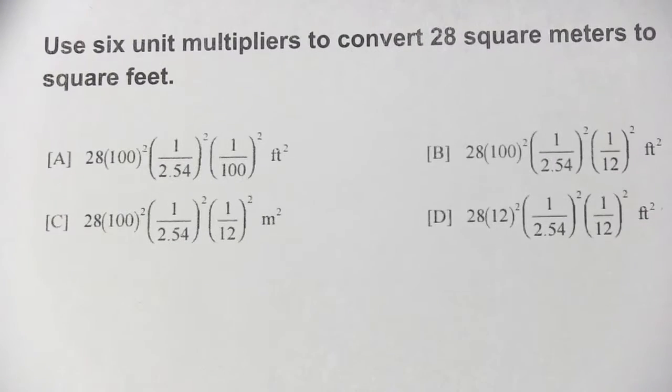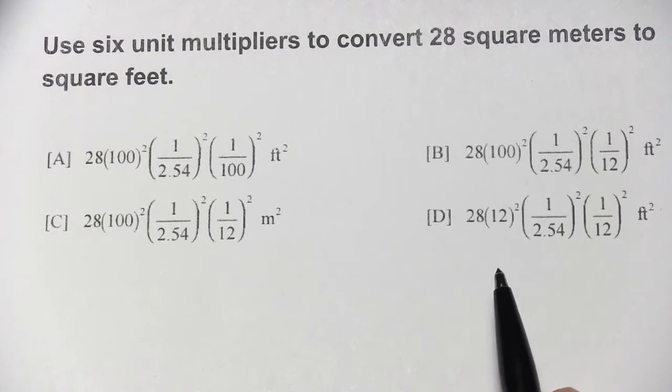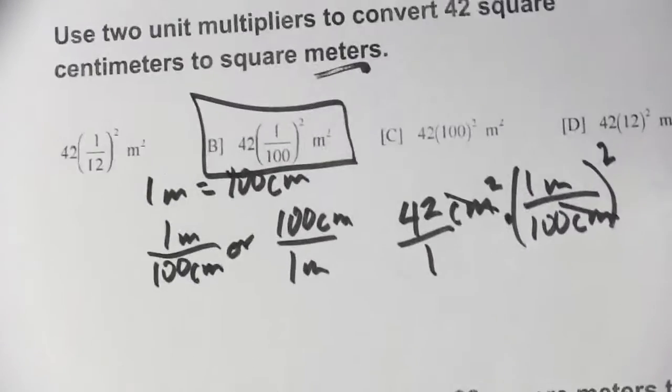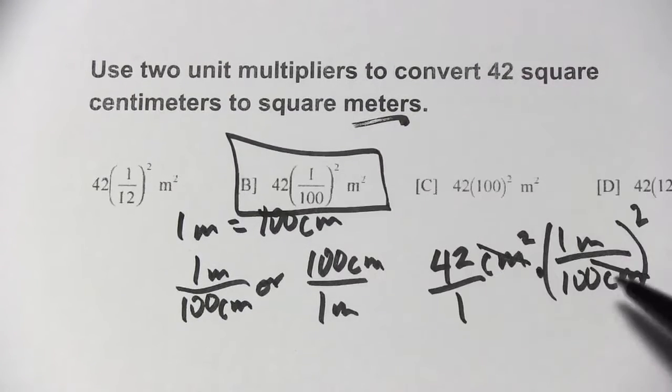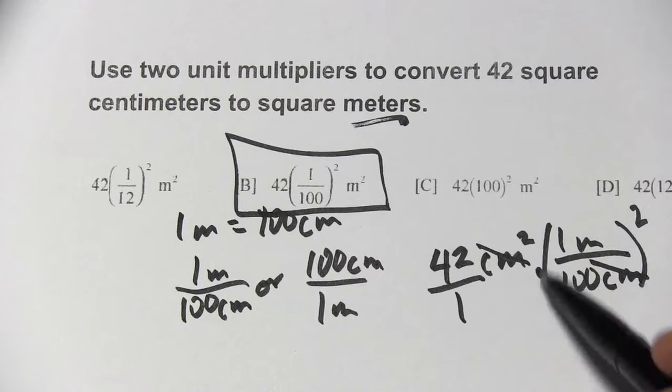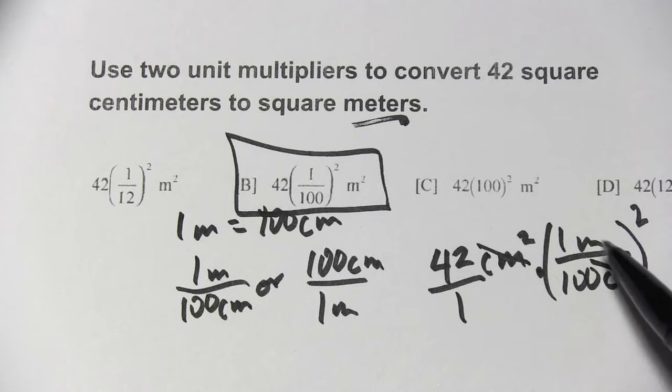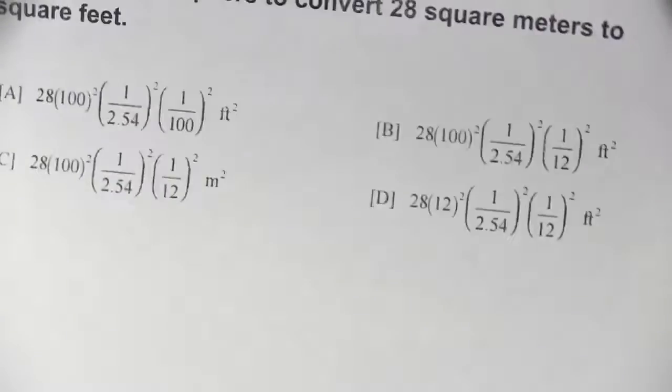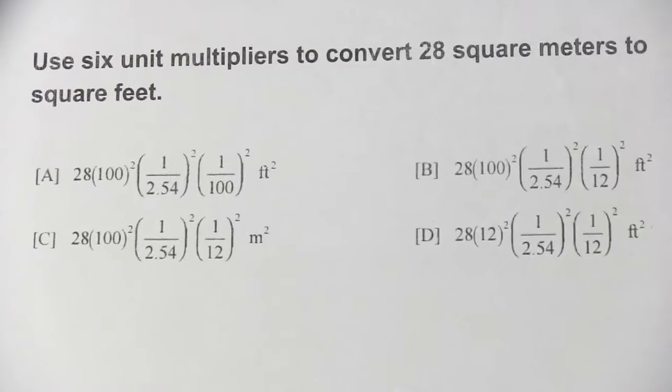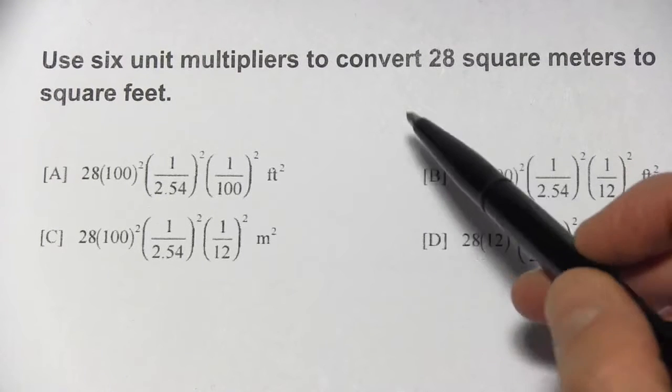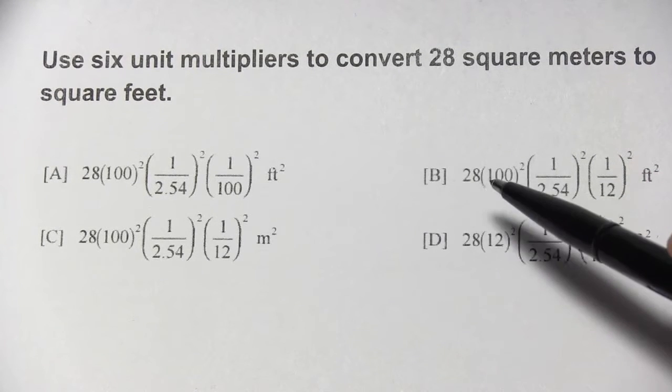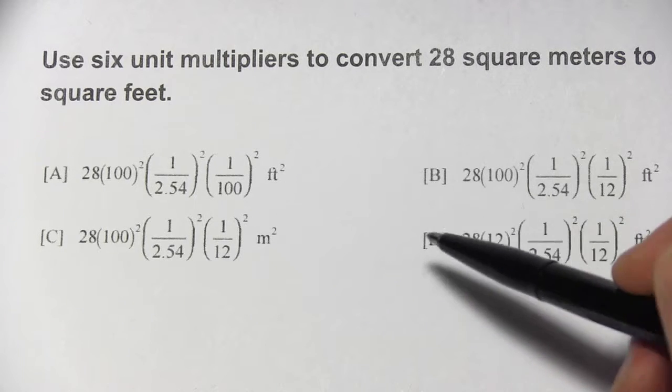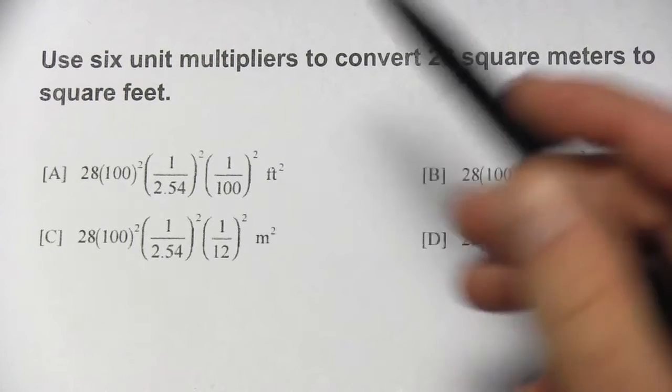Let's try a slightly more complicated one. So this one says use 6 unit multipliers. In that problem they said use 2 unit multipliers. It looks like we use just 1, but because it's squared, the way we think of this is 1 over 100 times 1 over 100. So there's really 2 of them that we're multiplying in there. So when this next problem says use 6, we're going to have 3 things that we put out there, but each of them will be squared. So it'll look like we're using 3 when we're really using 6.